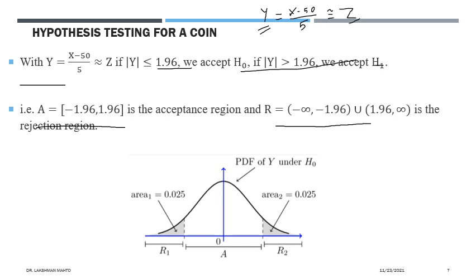The PDF of Y looks approximately like a standard normal PDF. We can visualize the acceptance region and rejection region: the acceptance region for Y is the central region, and the two shaded left and right tails are the rejection region. If the value of Y falls in the shaded rejection region, we reject H0 and accept H1. If the value of Y falls in the acceptance region, we accept H0.